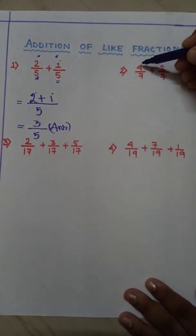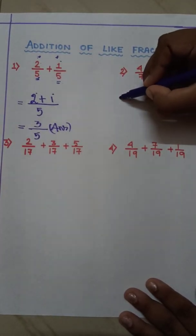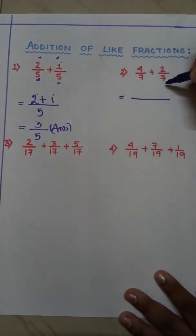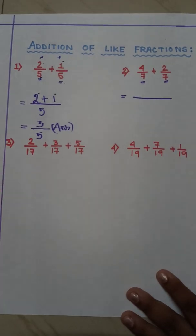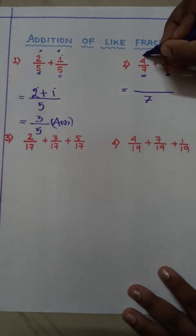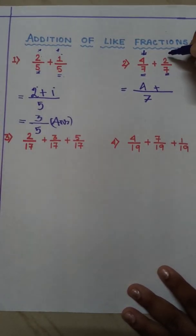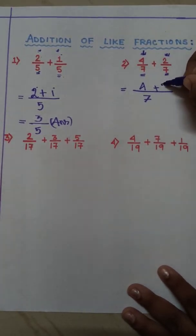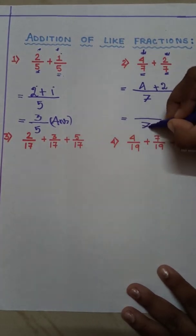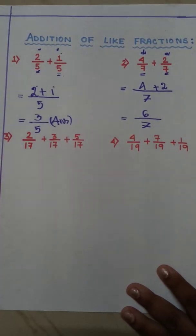Now the next one: 4 by 7 plus 2 by 7. We draw a big line. In both cases the denominator is the same — 7 — so we write 7. The numerators are 4 and 2, so we write 4 plus 2. Again we draw a big line, write 7 at the denominator, and 4 plus 2 is 6. So our answer is 6 by 7.